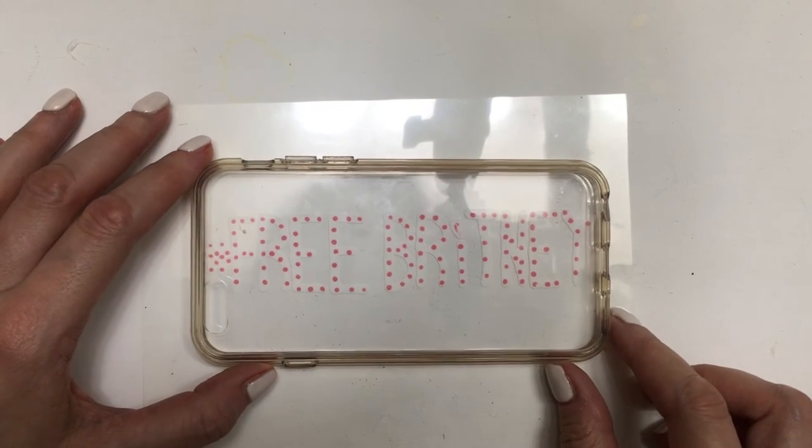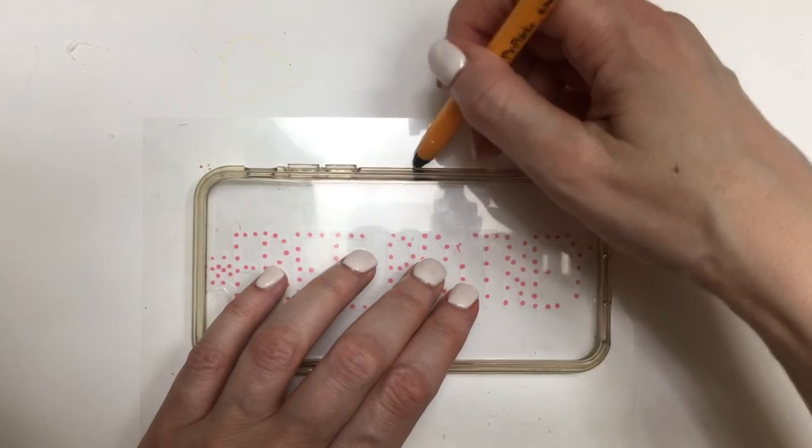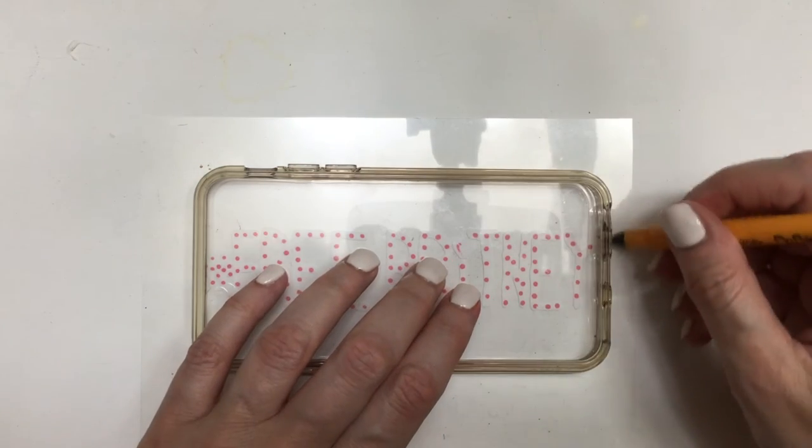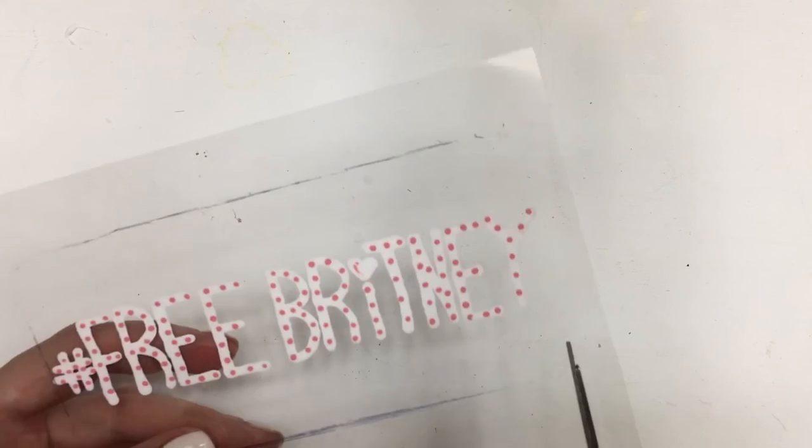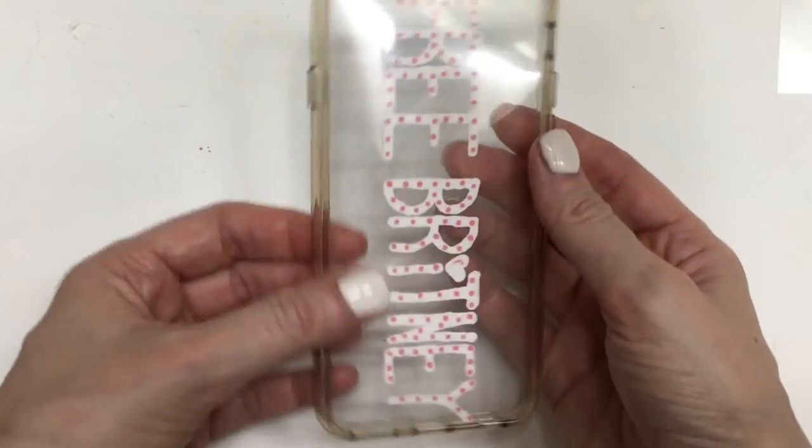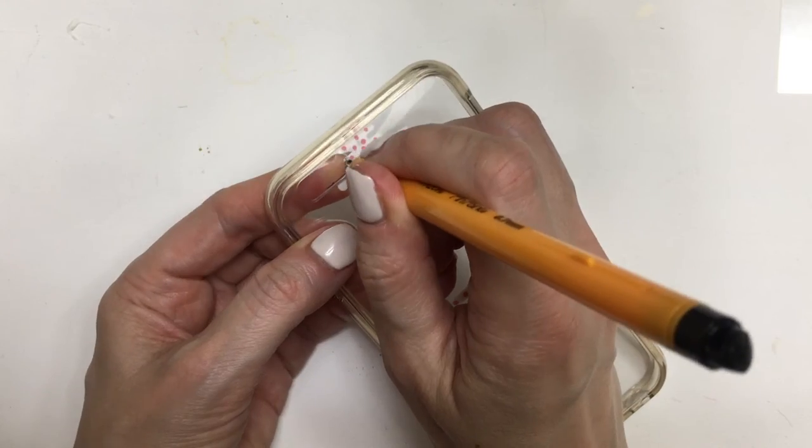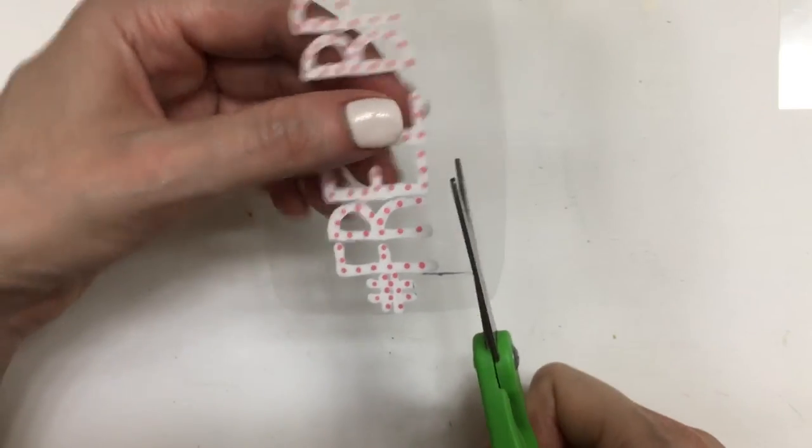The reason I did this upside down is just it looked more like printed instead of like painted. I'm going to be placing my clear phone case on top of this, I'm going to be tracing the shape of my phone case and then just cutting it, then just placing this inside.